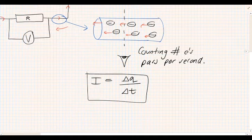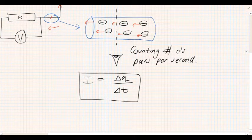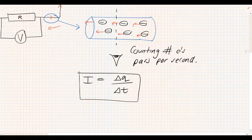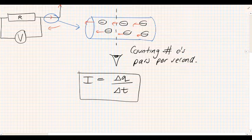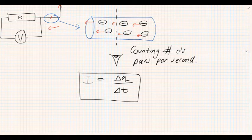It doesn't matter whether it's positive charge or negative charge. It could be the number of electrons per second or it could be the number of positive charges per second. But essentially it is the amount of charge passing a point per second. That is what current is.